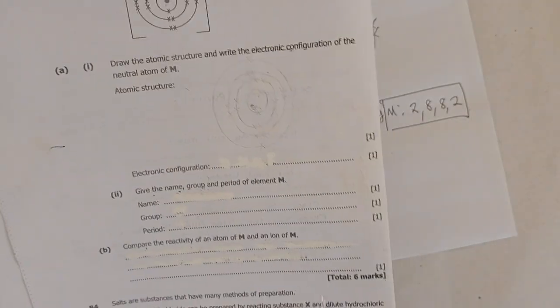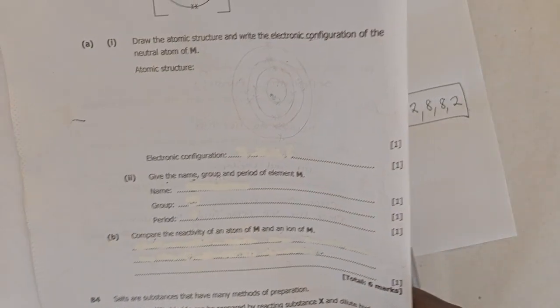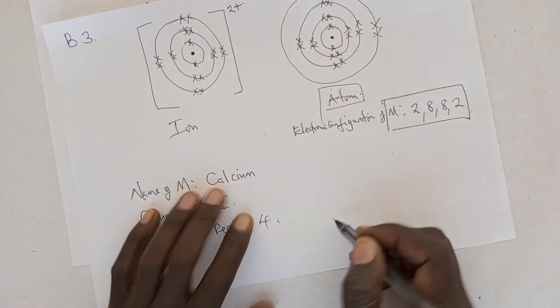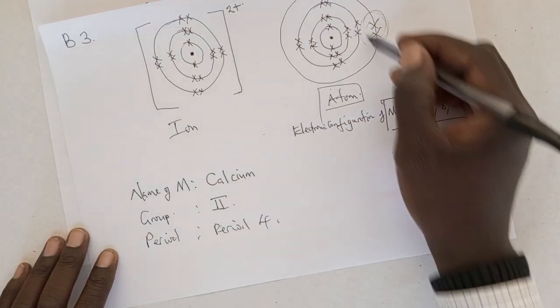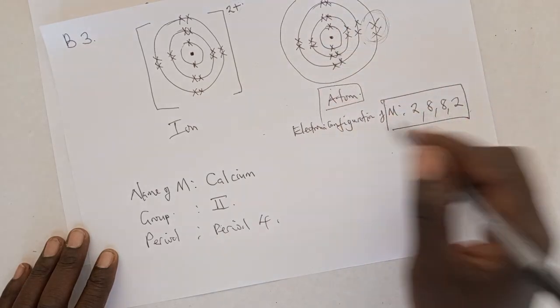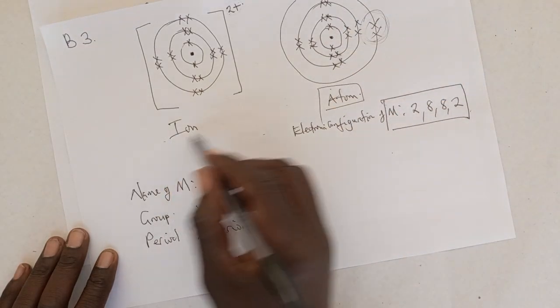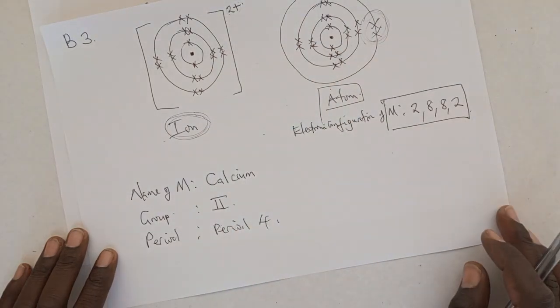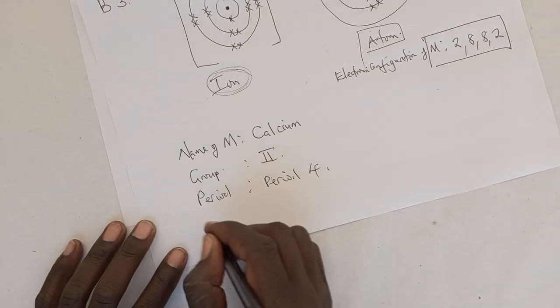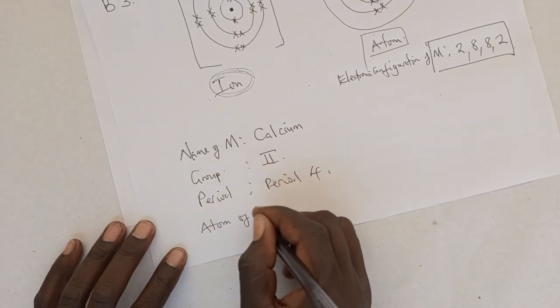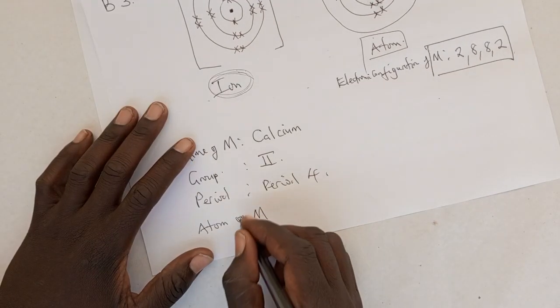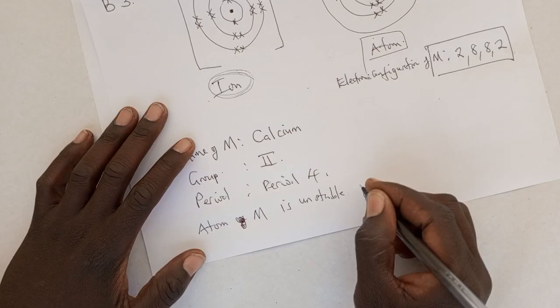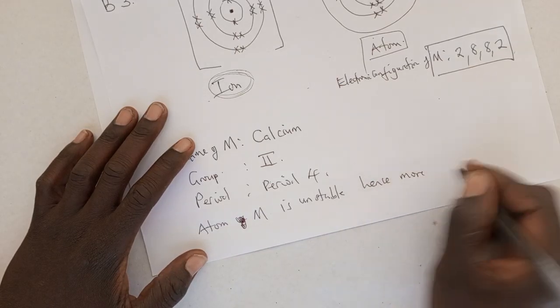So, the answer there would be M. Then, the atom of M is unstable. It is unstable. At this point, it is unstable. The atom of M is unstable. And hence, it is ready to lose the electron. So, we can say an atom of M is unstable and hence more reactive than the ion of M, who has acquired stability by losing the two electrons.